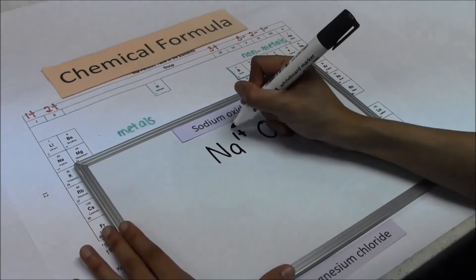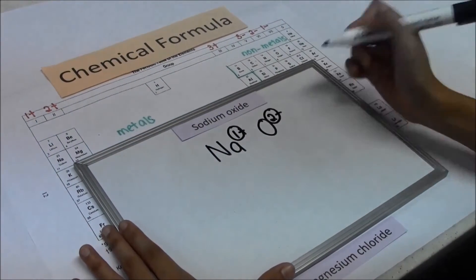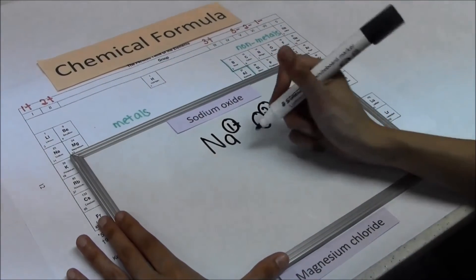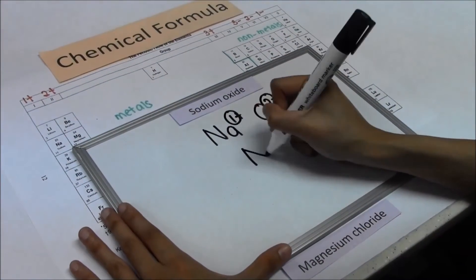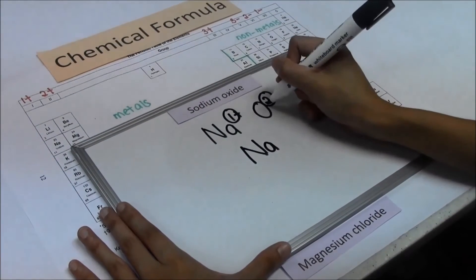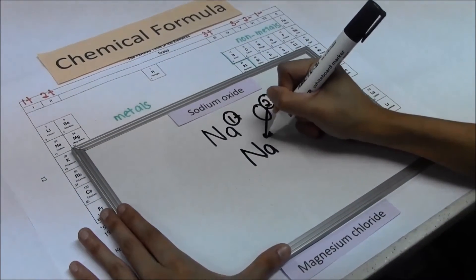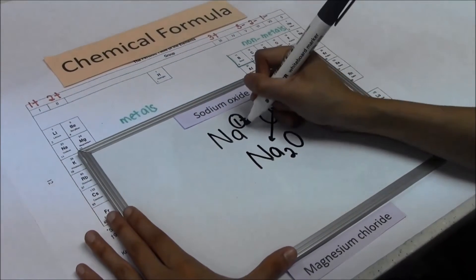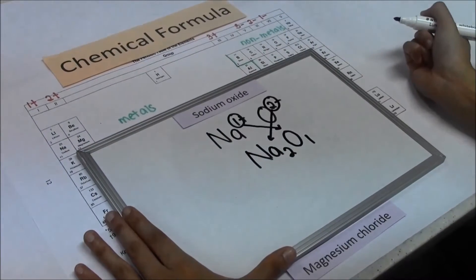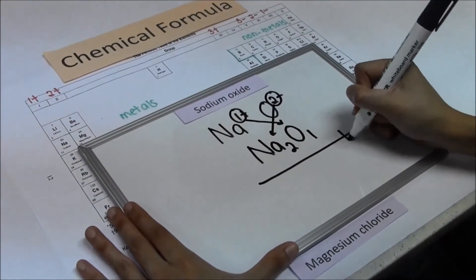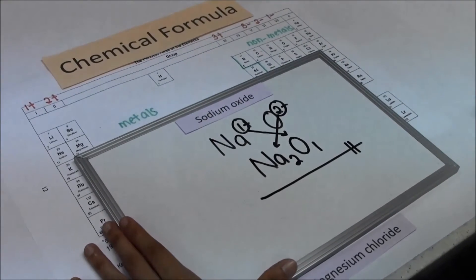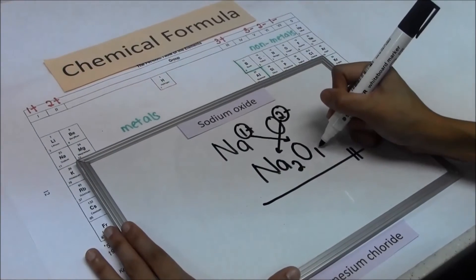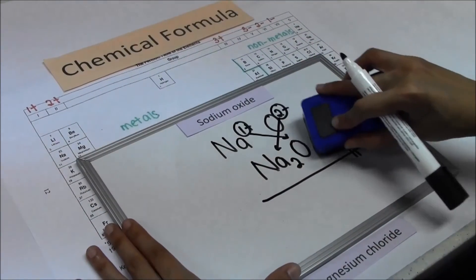Circle the number on the charge. The numbers are not the same, so you cannot cancel them. You will do the cross multiply. Na will follow the number, and O will follow the number. This is the chemical formula for sodium oxide. Usually the number one — we don't write it, so you will need to erase the number.